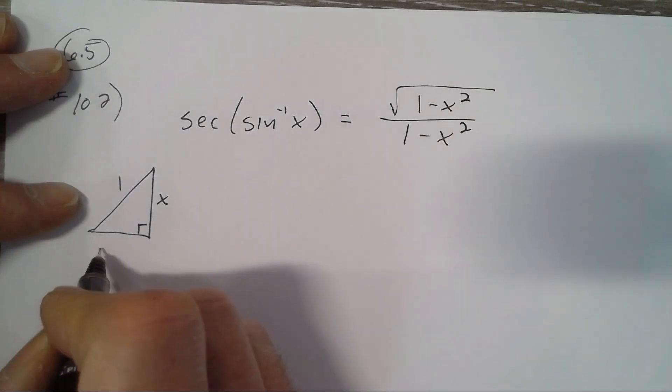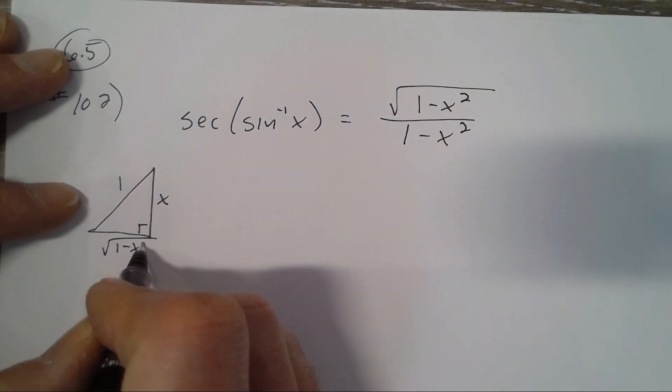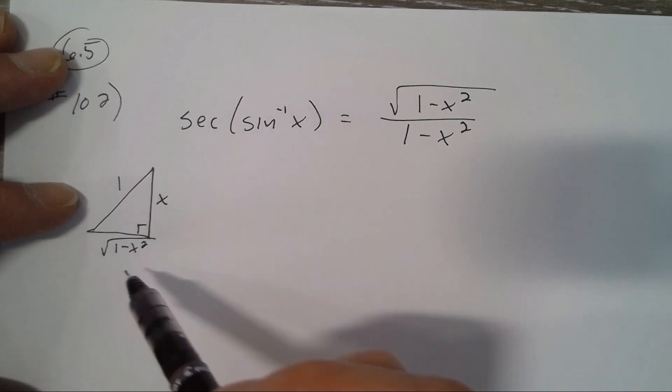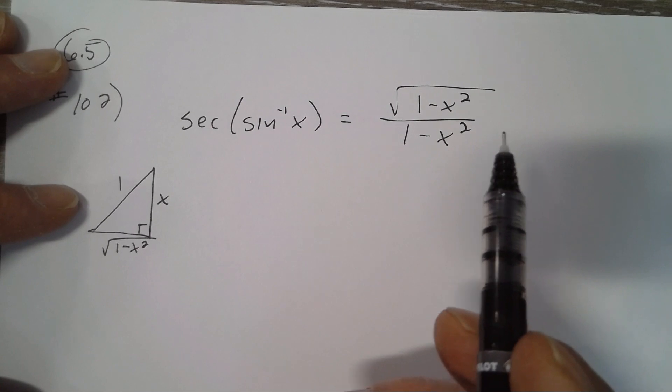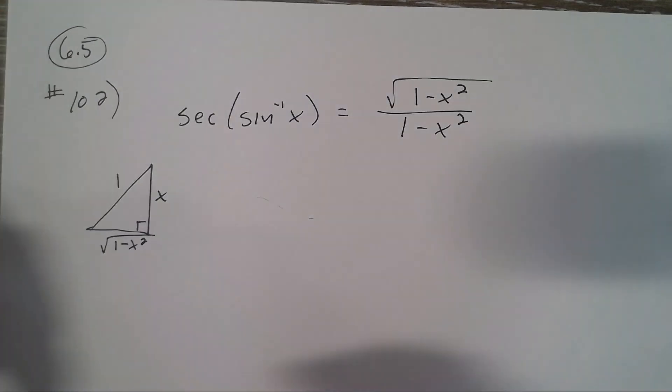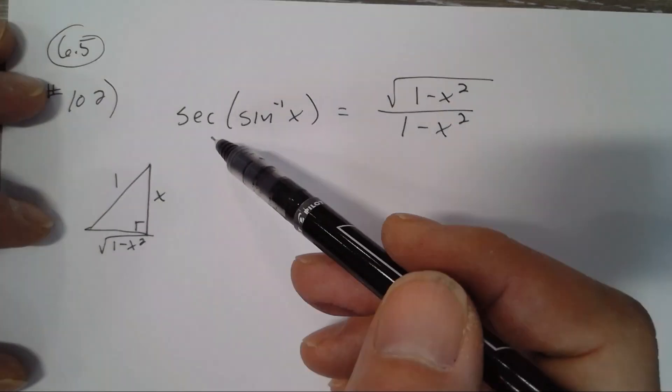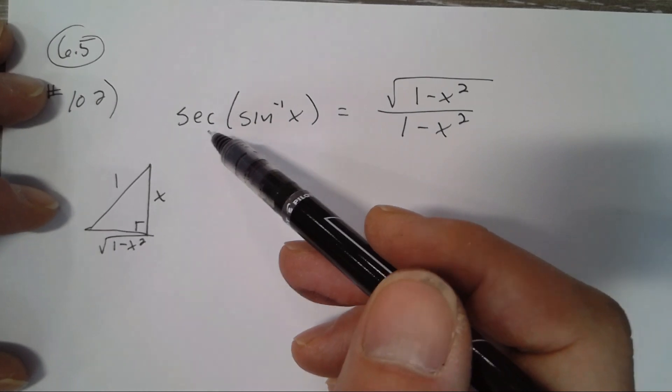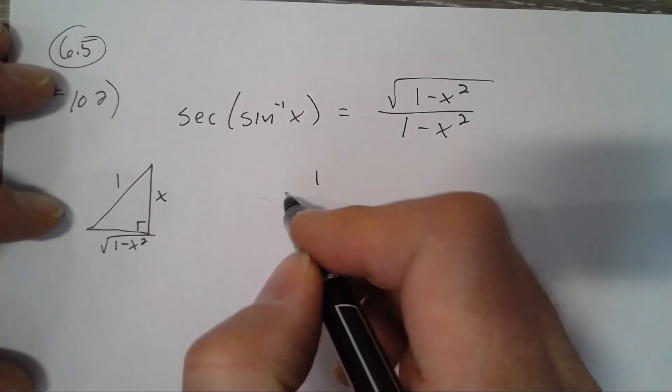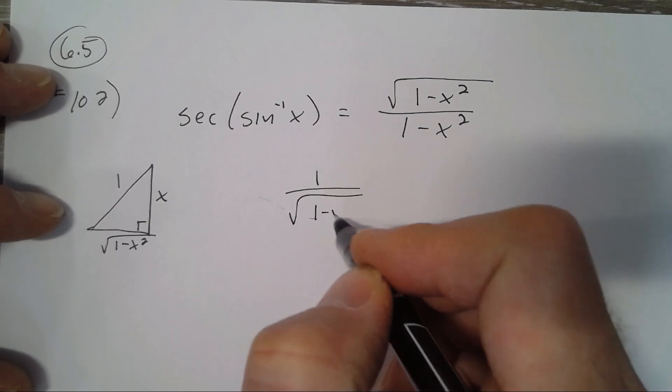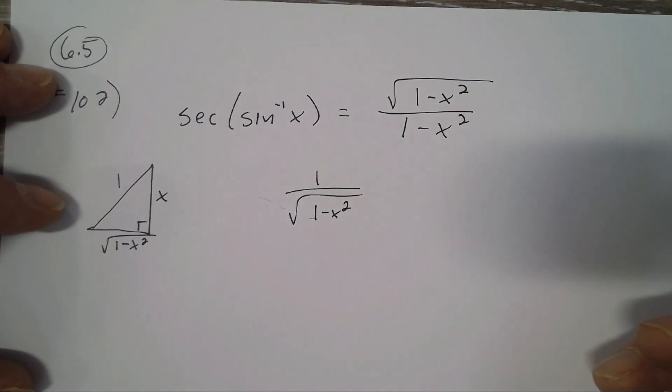So Pythagorean theorem: you get square root of 1 squared minus x squared—hypotenuse squared minus the other leg squared. The secant is the reciprocal of cosine, so it's the hypotenuse over the adjacent. So it's 1 over square root of 1 minus x squared. That's our answer, but the book doesn't like square roots in the bottom.